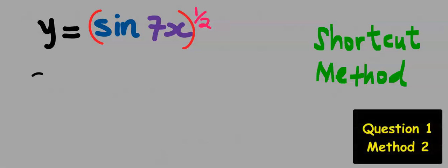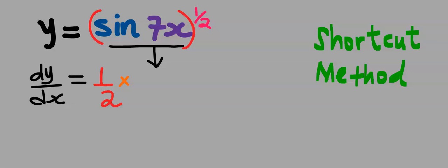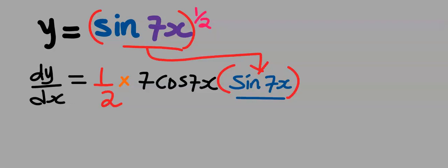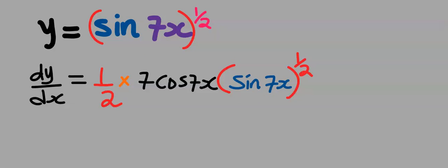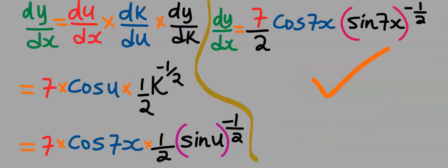Using the shortcut approach, our dy/dx: the first step is to bring down the power, which is 1/2. Next, differentiate everything inside the bracket using chain rule, which gives 7·cos(7x). Next, recopy back everything inside the inner function, which is sin(7x) — that is both the first and second inner function. The power will minus 1 according to the general rule. This is our dy/dx, which is the same as we obtained earlier. From the options, our answer is C.